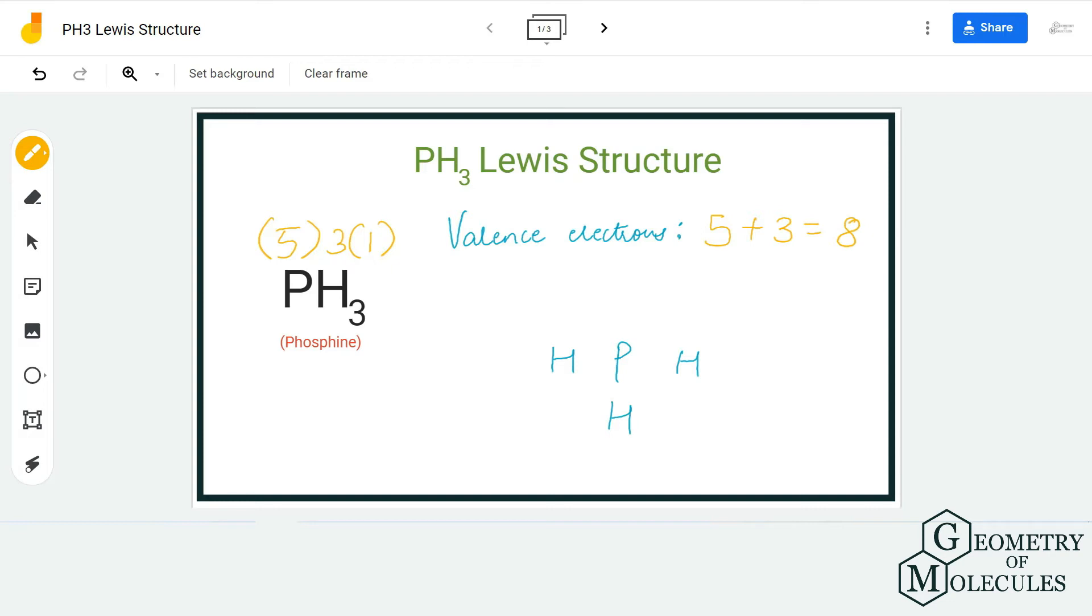So in total we have eight valence electrons for PH3 molecule. Now we will place the phosphorus atom in the center and all the hydrogen atoms around it. To show bond formation between phosphorus and hydrogen, we place a pair of electrons like this.